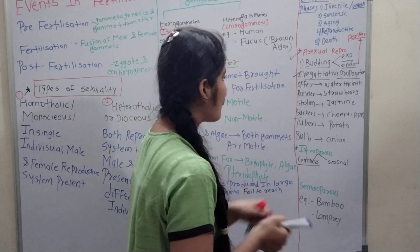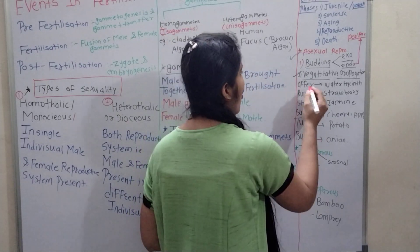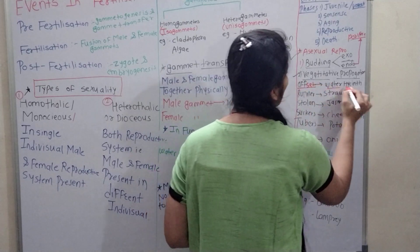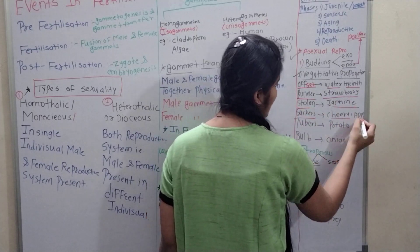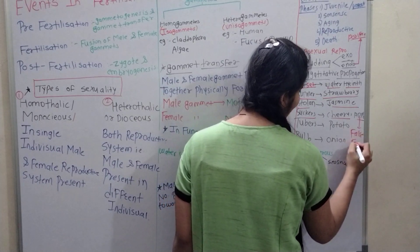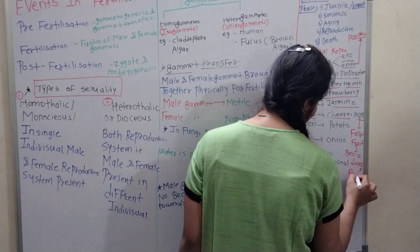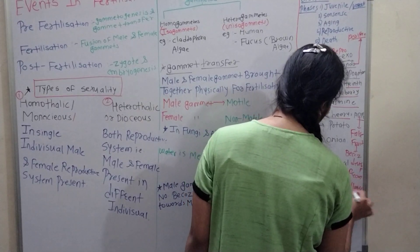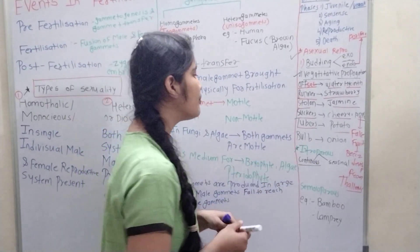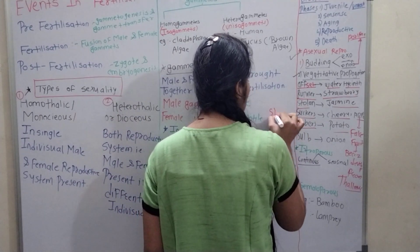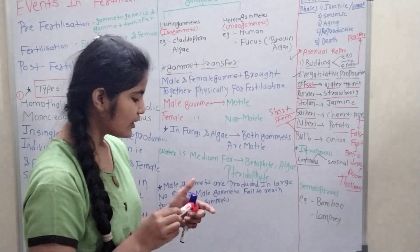Then vegetative propagation. In that vegetative propagation: offset, runner, stolon, suckers, tubers, bulb. For offset, example is water hyacinth. For runner, strawberry. Stolon, jasmine. Suckers, cherry and apple. Apple is false fruit because it is developed from thalamus. Tubers - potato. In tubers, these are known as the eyes of the potato. And bulb is a short stem, example is onion.